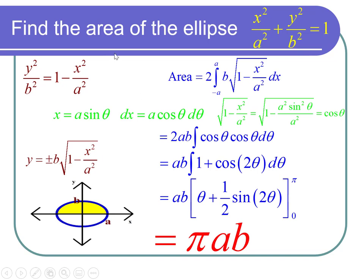So what we end up is just the ab times pi or pi ab. So now we can say that the area of this general ellipse x squared over a squared plus y squared over b squared equals one is equal to pi times a times b.